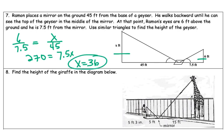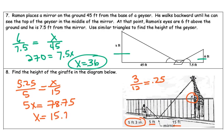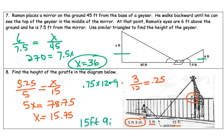Find the height of the giraffe in the diagram. We have 15 here, height x, and 5 feet 3 inches. Since 3 divided by 12 equals 0.25, we change this to 5.25. So 5.25 over 5 equals x over 15. Cross product: 5x equals 78.75. Divide by 5, and x equals 15.75. Converting 0.75 times 12 equals 9, so the answer is 15 feet 9 inches.